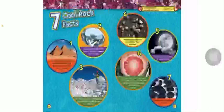The geode looks like a plain dull rock on the outside. Crack it open and there might be beautiful crystals hidden inside. Obsidian feels as smooth as glass.